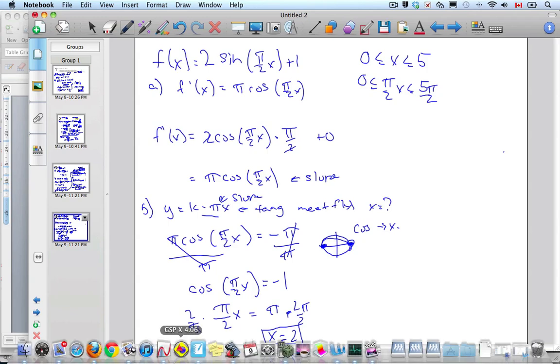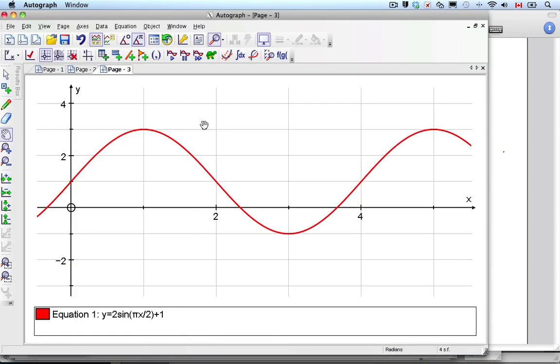So if I look at the graph, here is this. It's saying the tangent. There's going to be a tangent at 2 meets the curve. Here's got to be the tangent line's like that.